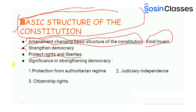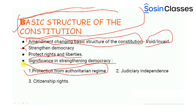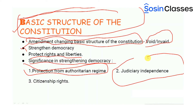Coming to the significance of this doctrine in strengthening democracy: first, it provided protection from an authoritarian regime. Second, judiciary independence — it delineates a true separation of power where the judiciary is independent of the legislature and executive, giving immense power to the Supreme Court. Third, citizenship rights — by restraining the amending powers of the legislature, it provides fundamental rights to citizens which no organ of the state can overrule. Being dynamic in nature, it is more progressive and open to changes over time.